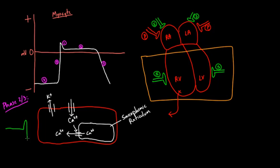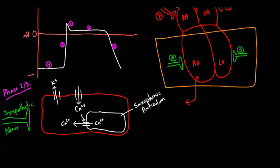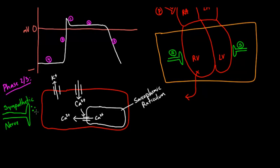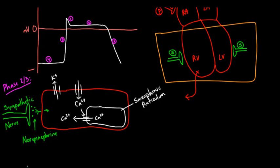Now, if you have a sympathetic nerve, it's going to release a neurotransmitter into the synaptic space, which binds to a receptor and sends a message into the cell. That neurotransmitter is norepinephrine — not acetylcholine, which is the neurotransmitter that parasympathetic nerves use.